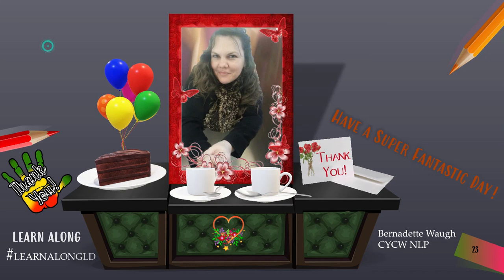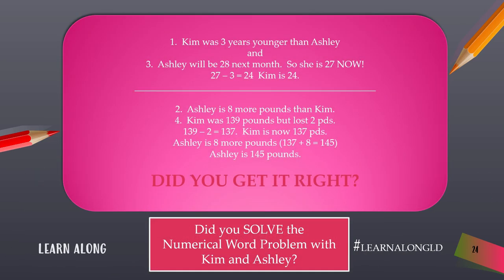Now for the solution to that problem. Kim was three years younger than Ashley, and Ashley will be 28 next month, so that means she's 27 now. If Kim is three years younger: 27 minus 3 equals 24, so Kim is 24 years old. Ashley is eight more pounds than Kim. Kim was 139 pounds but lost two pounds: 139 minus 2 equals 137, so Kim is now 137 pounds. Ashley is eight more pounds: 137 plus 8 equals 145. Ashley is 145 pounds.